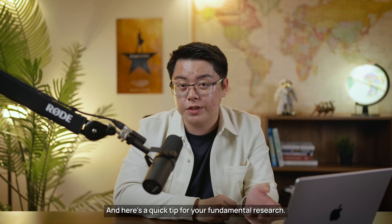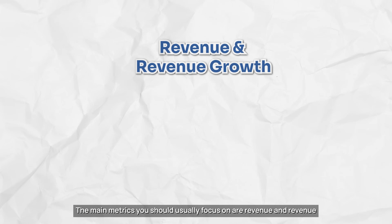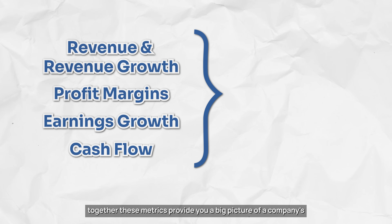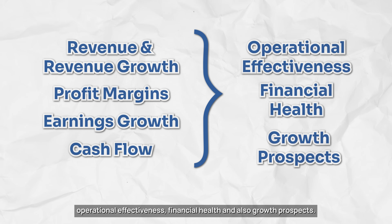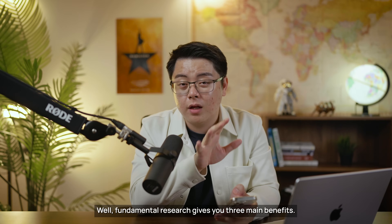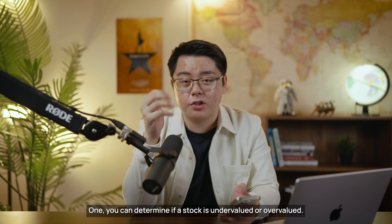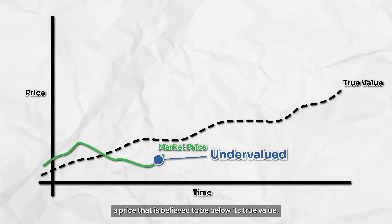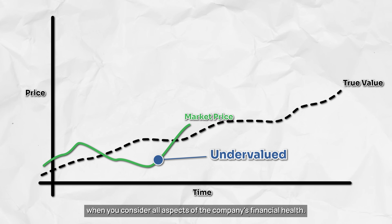Here's a quick tip for your fundamental research. The main metrics you should focus on are revenue and revenue growth, profit margins, earnings growth, and cash flow. Together, these metrics provide a big picture of a company's operational effectiveness, financial health, and growth prospects. Fundamental research gives you three main benefits. First, you can determine if a stock is undervalued or overvalued. Undervalued stocks are ones being sold for a price believed to be below their true value — how much the stock really should be worth when you consider all aspects of the company's financial health.